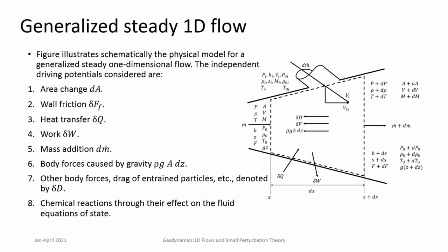One is that it is a varying area duct, so area change is happening. Then we are considering that there is wall friction, so there is a frictional force along the walls. There is heat that is getting added or removed, so heat transfer is there. External work can be done by or on the system. There can be mass addition with different stagnation temperatures and pressures for the mass being added. You can have body forces, and also in some cases you can have entrained particles which induce some drag, and there can be effects like chemical reactions which can change properties of the fluid.